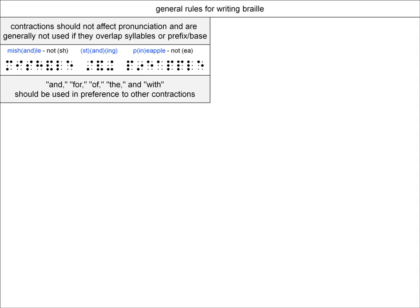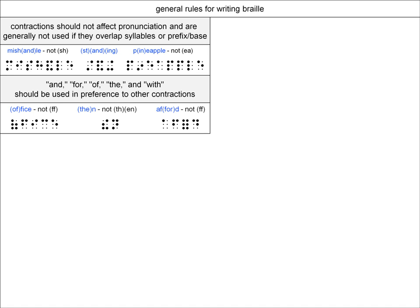The next commonly seen rule is that the contractions AND, FOR, OF, THE, and WITH should be used in preference to other contractions. One reason for this rule is because these cells do not represent anything else, so there is no chance of them being misinterpreted. So, for instance, the word office would use the OF contraction instead of the FF contraction. The word then would use the THE contraction instead of the TH and EN contractions.